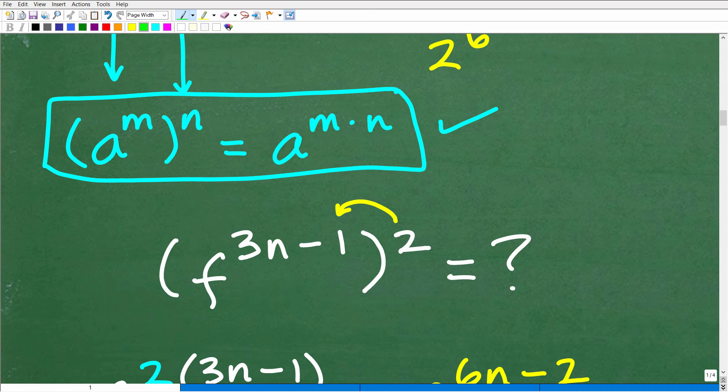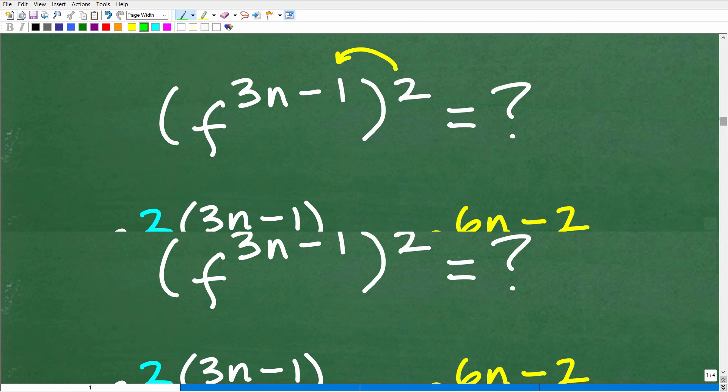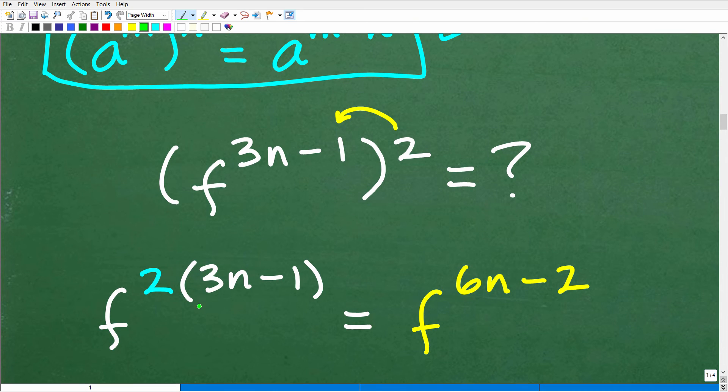Like so. Okay, so now we have f to the 3n minus 1. So we could put this in parentheses. We're going to take that two and multiply it by this, so we put this two in front right here. Doesn't make a difference. So here we have f to the two times 3n minus 1. So two times 3n is 6n, and two times this one right here is two, hence our answer.